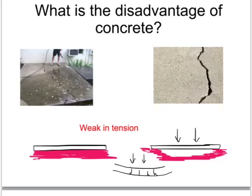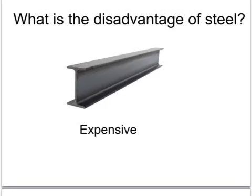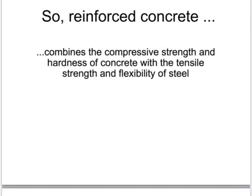So although concrete is very strong in compression, its disadvantage is that it is weak in tension. Steel has the advantage of being strong in tension, but its disadvantage is that it is expensive — to make a large girder completely out of steel is very pricey. So reinforced concrete is used because it combines the compressive strength and hardness of the concrete with the tensile strength and flexibility of the steel. The steel gives the reinforced concrete slab a little bit of give and stops it from cracking.